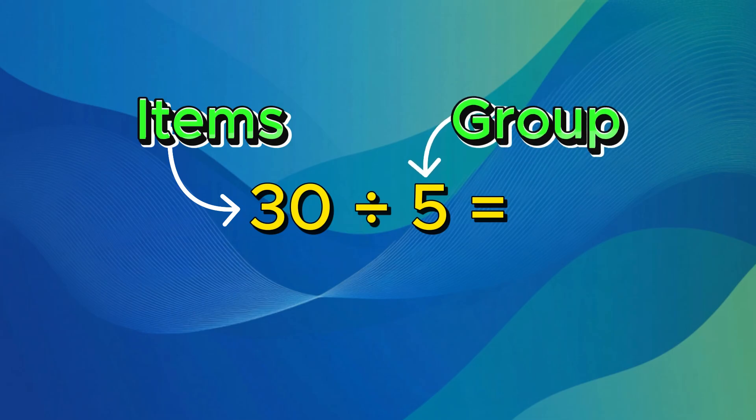So, we want to evenly pass out all 30 cookies to 5 different students. How many cookies will each student get? Create your 5 boxes first. Next, fill each box with a cookie until all the cookies are gone.